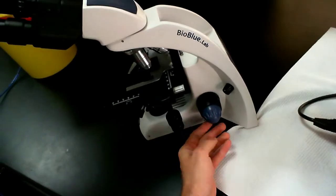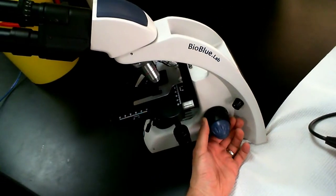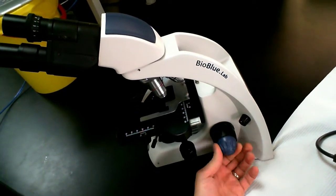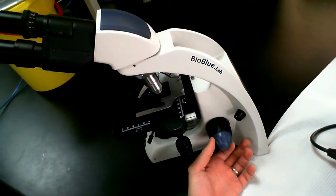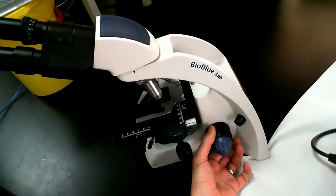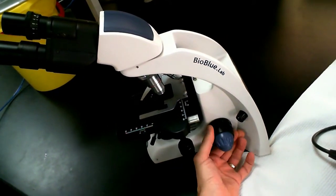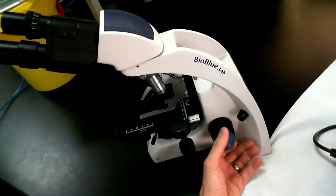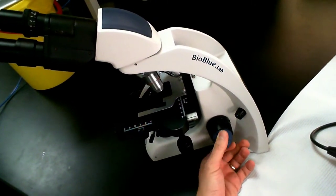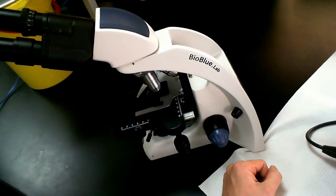In this case we have coarse focus. Let's try to focus the camera first. Here's the coarse focus and the fine focus is the one that's kind of a bluish gray color. So the one that's closer to the body of the microscope is the coarse focus. The one sticking out a little bit more is the fine focus knob.